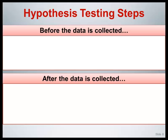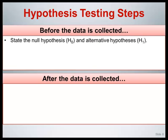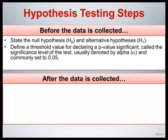Let's look in a little more detail at the steps for conducting a hypothesis test. Before the data is collected, state the null hypothesis and alternative hypothesis. Define a threshold value for declaring a p-value significant — the significance level of the test, denoted by alpha, commonly set to 0.05. Select an appropriate statistical test. We will be introducing and discussing the most commonly used statistical tests in the next two modules.